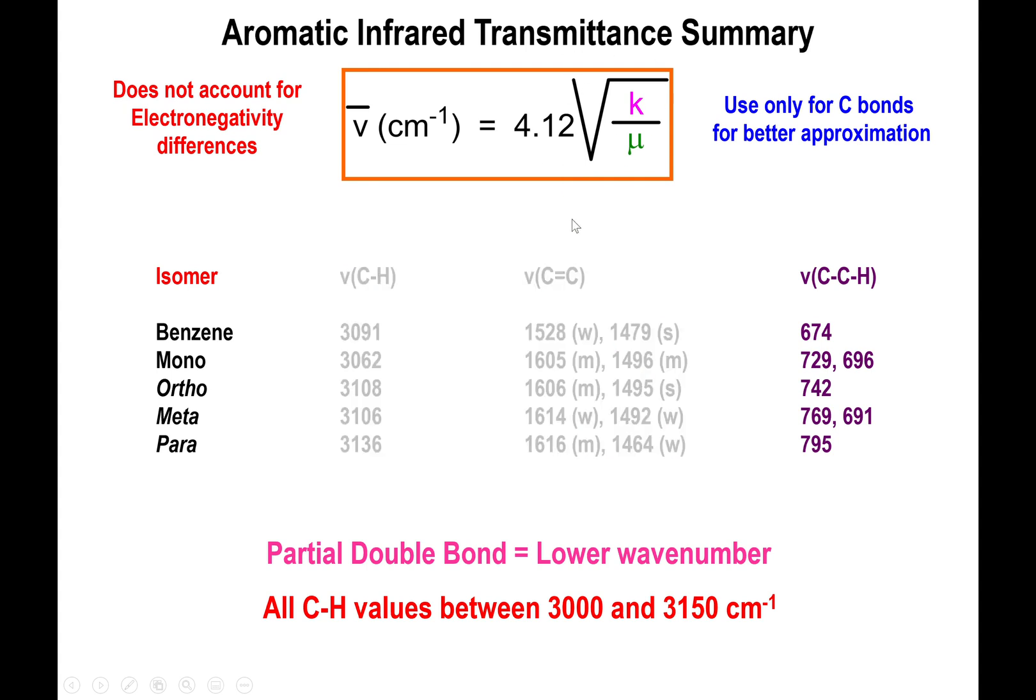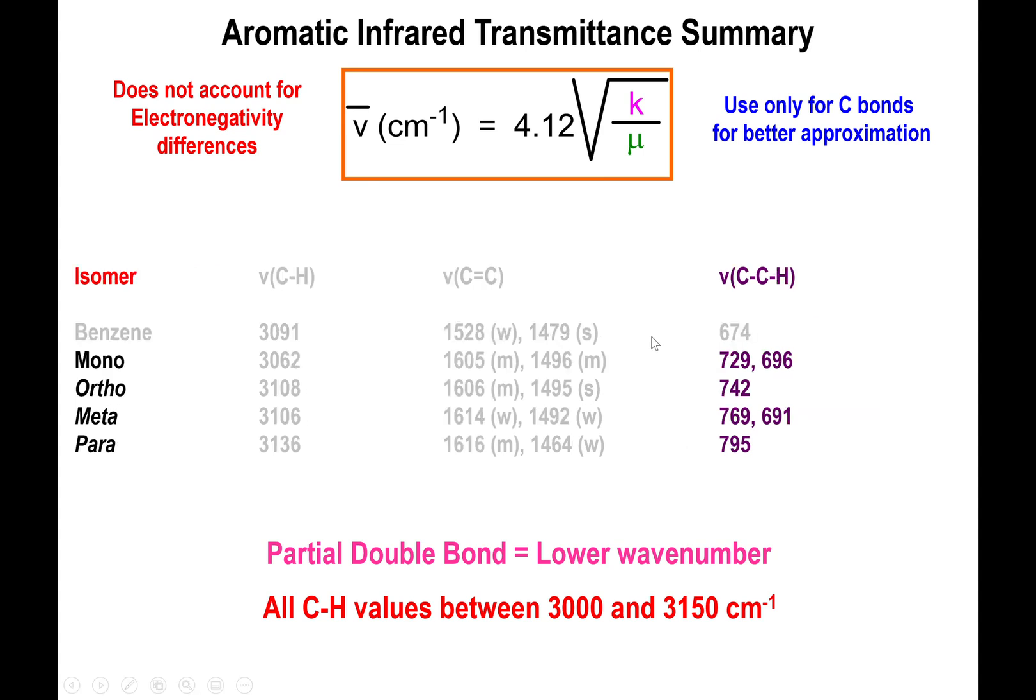All right, so now that brings us to the bending modes, the C-H bending modes that in the different derivatives of aromatic compounds we looked at here which are basically the methyl derivatives. So you have one methyl derivative, we have two which are 1,2, 1,3, 1,4 methyls separated apart in the rings.